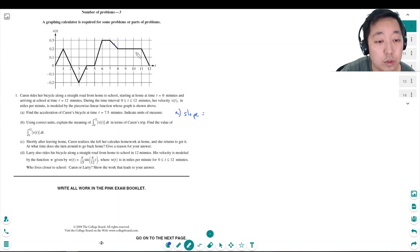It's equal to the change in y. Let's see. It's 0.2 minus 0.3 over 8 minus 7. And that's minus 0.1 over 1. That's minus 0.1. And the units of this are miles per minute squared.